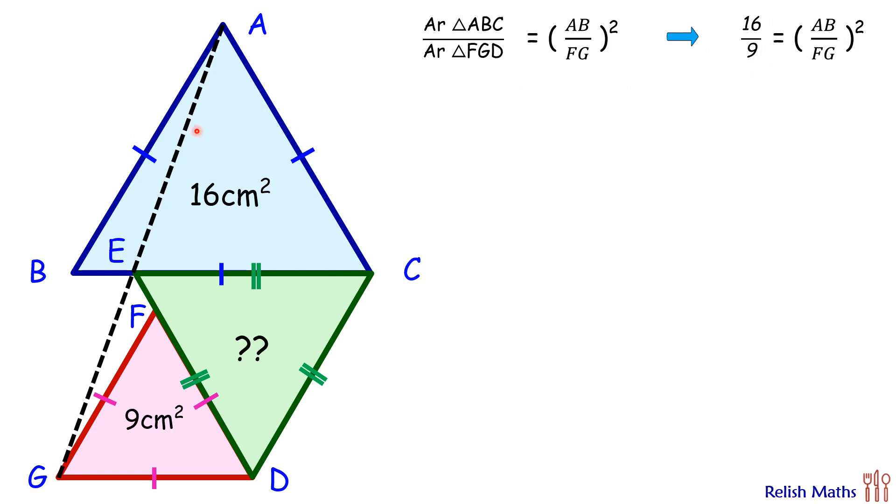We can safely assume, let the side of triangle ABC be 4a, and the side of FGD—in that case, the FGD side will be 3a.